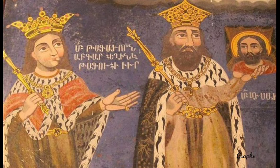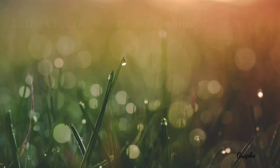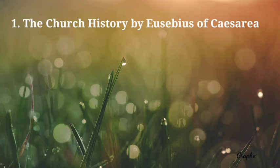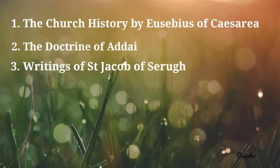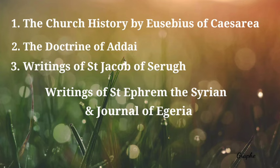Today we are going to look at a story mentioned in history as well as in the traditions of the Orthodox Church, as a proof of how we came to know this face of Jesus. The story is mentioned in a number of literatures. I am considering three main sources: first, the church history written by Eusebius of Caesarea from the 4th century; second, the Doctrine of Adai; and thirdly, the works of Saint Jacob of Syrus.